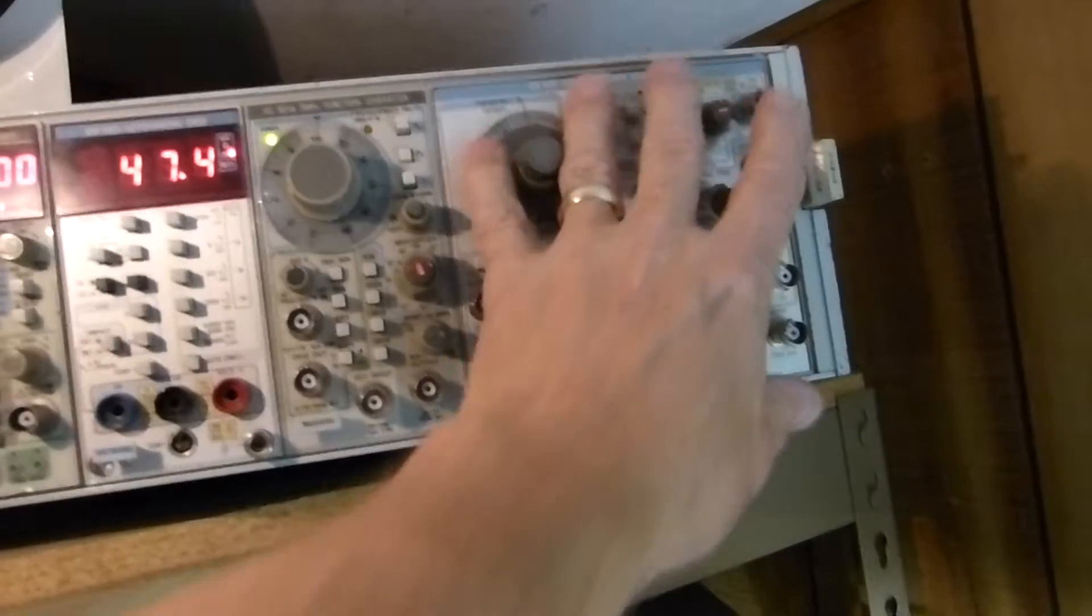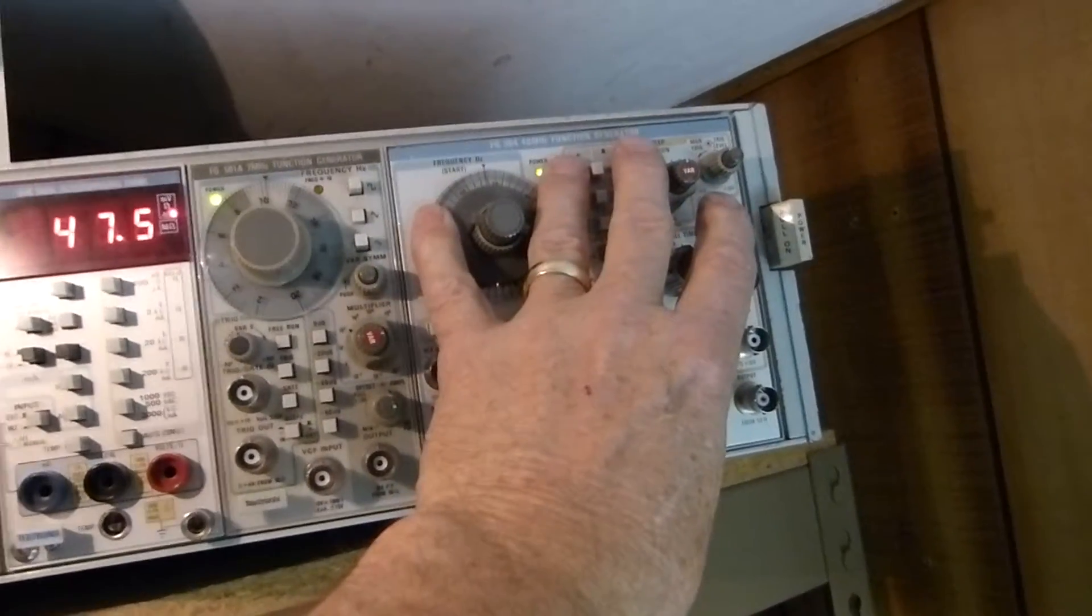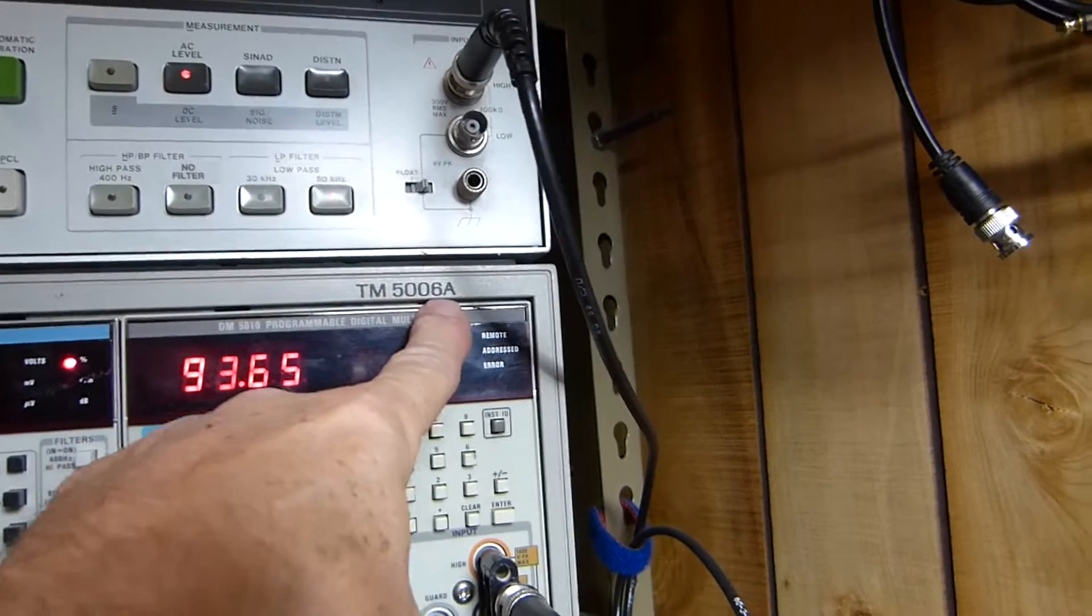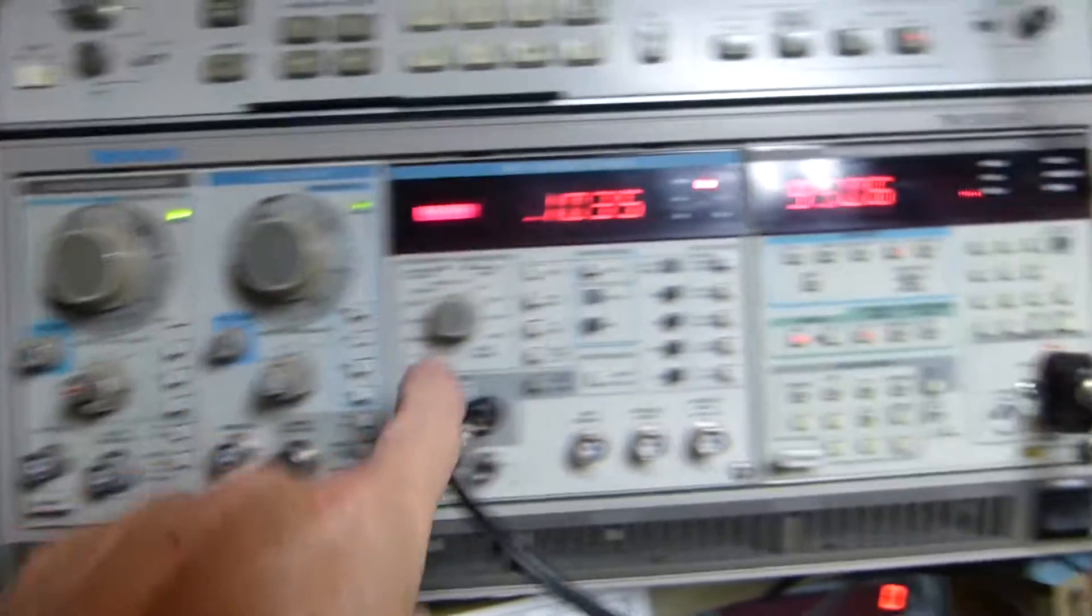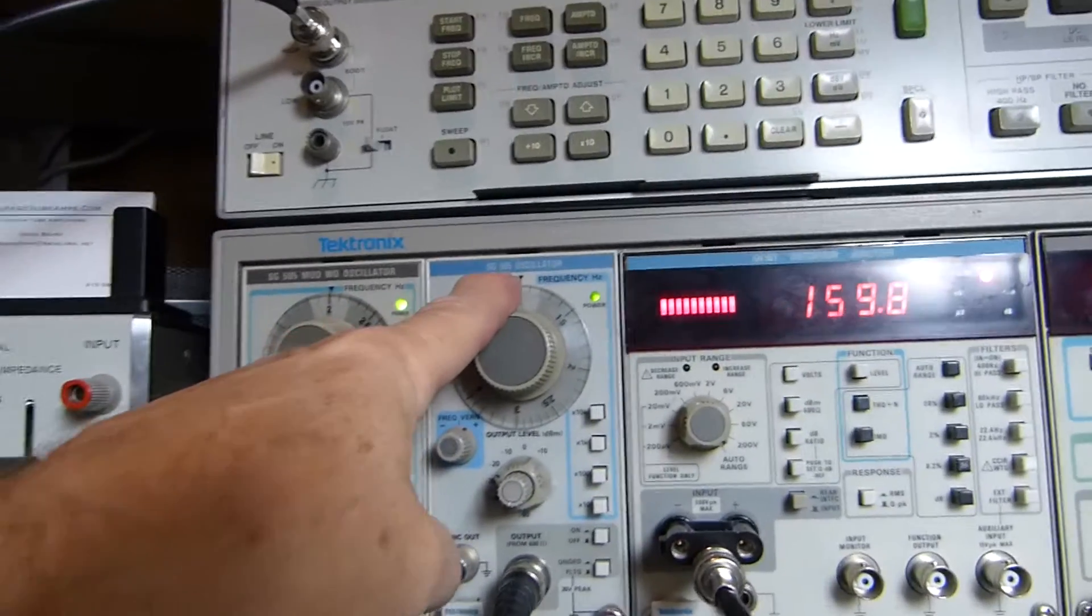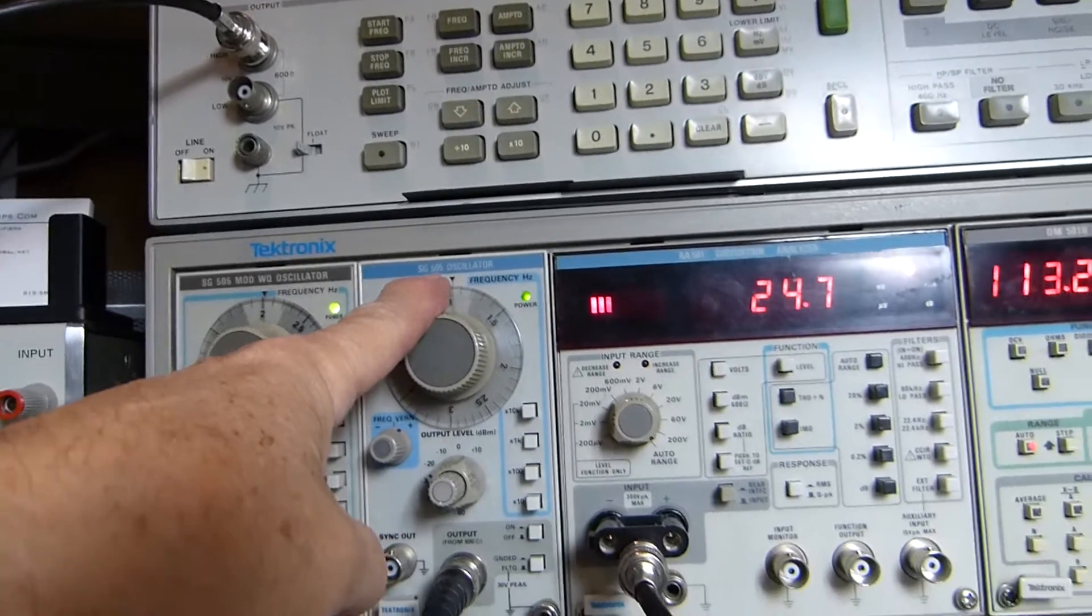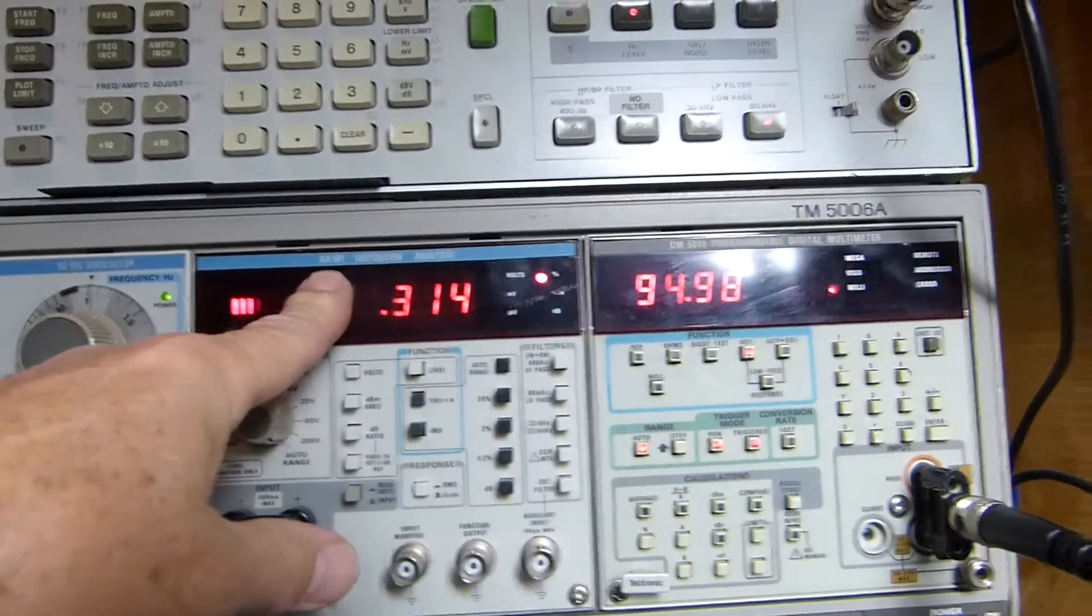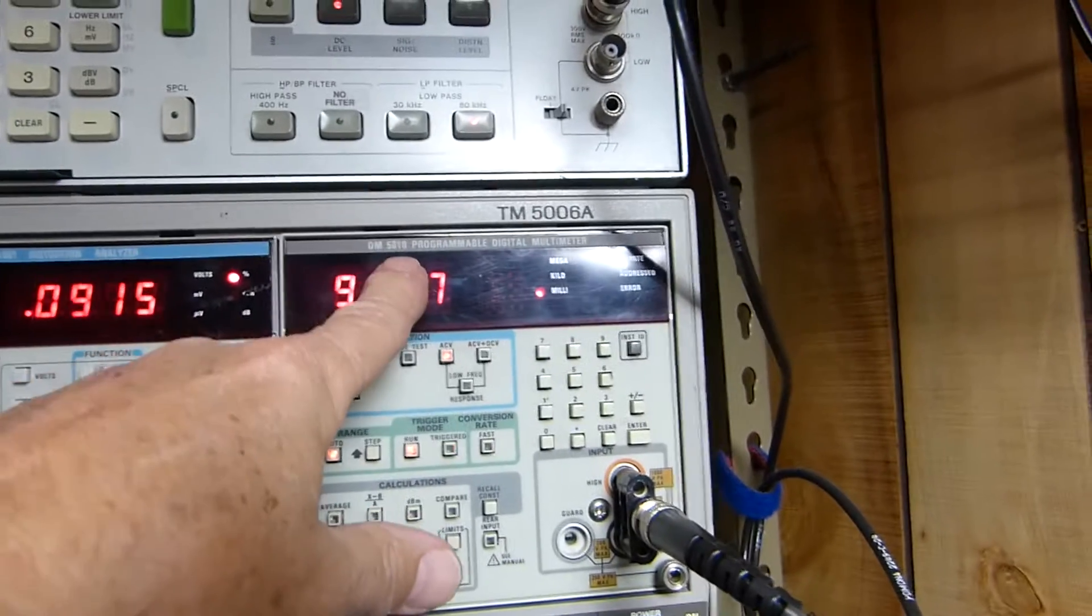If you go down to here, this is a TM 5000 series 5006 because it has six bays in it. This is an SG 505 signal generator, another SG 505 signal generator, an AA 501 audio analyzer, and a DM 5010 digital meter.